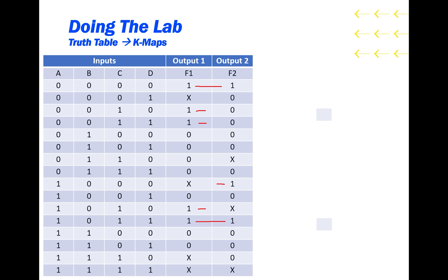But because we have a four-input truth table, each one of these terms is going to require one, two, three AND gates. And we have six functions, so three times six AND gates is way too many. We're going to have to do some simplification in order to create this circuit.